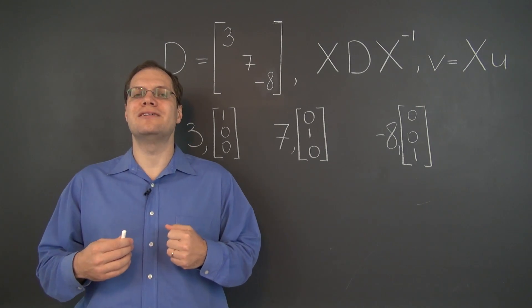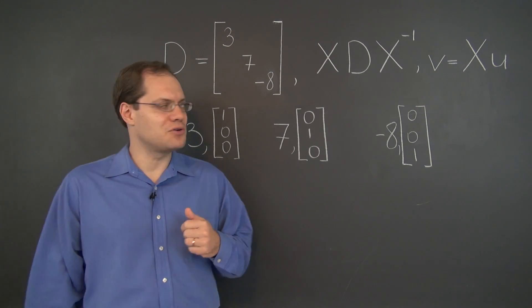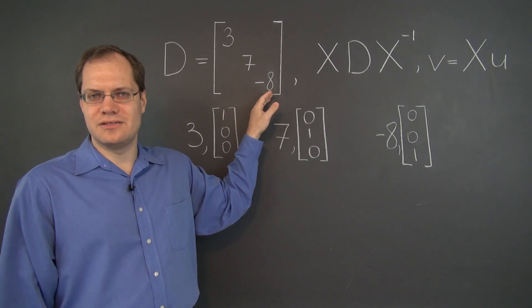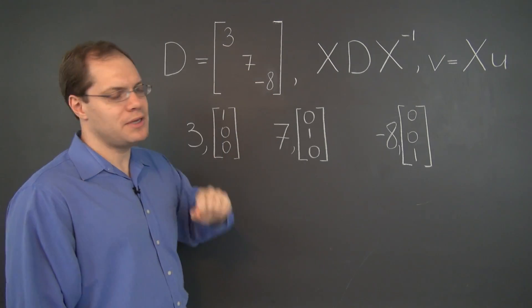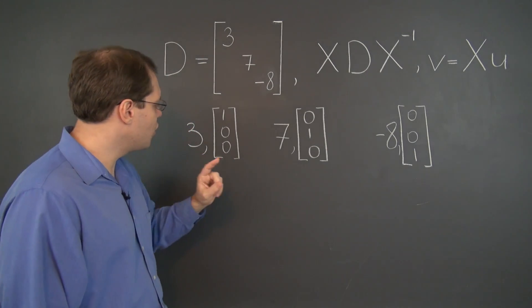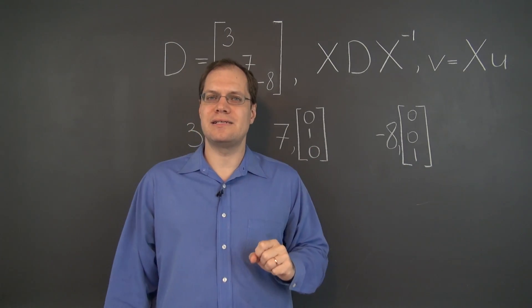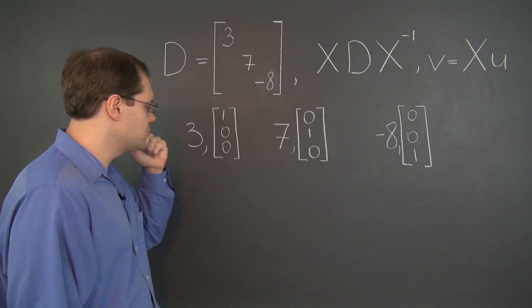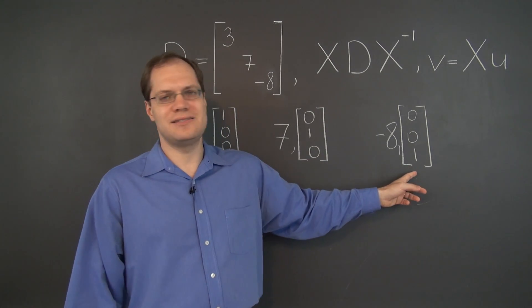So here's the ingredients that will go into answering that question. First of all, diagonal matrices have eigenvalues appear on the diagonal, and the corresponding eigenvectors are the standard bases in Rn: (1, 0, 0), (0, 1, 0), and (0, 0, 1). So these will be the basic ingredients that go into our recipe.